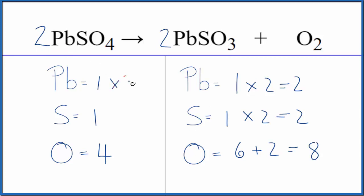One times two, that balances the lead atoms. One times two, that balances the sulfur atoms. Four times two, that gives us eight. And we're done. This equation is balanced.